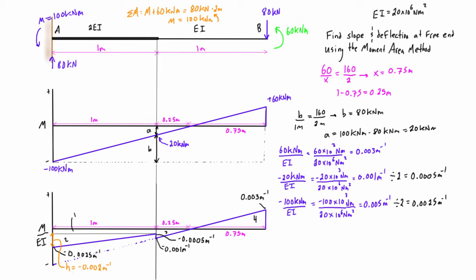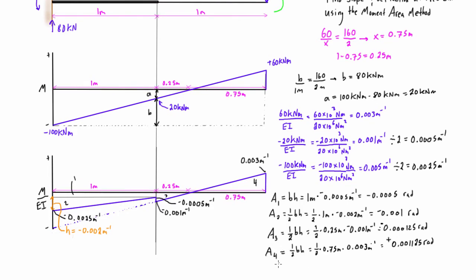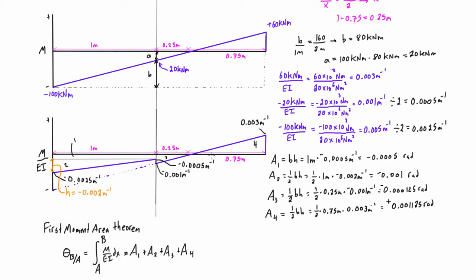We sum up the areas to get the angle of the tangent line at B relative to the tangent line at A, given by the first moment area theorem — which is just the sum of all these areas when adding composite shapes. Adding them all together we get three negative values and one positive value, giving us negative 0.0005 radians. That negative sign indicates the slope is going down off the horizontal.